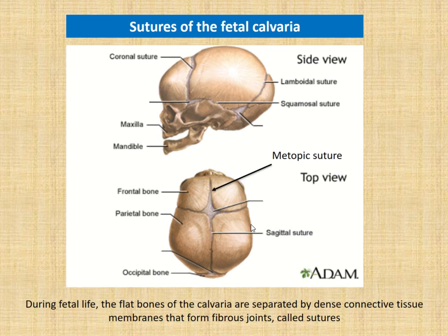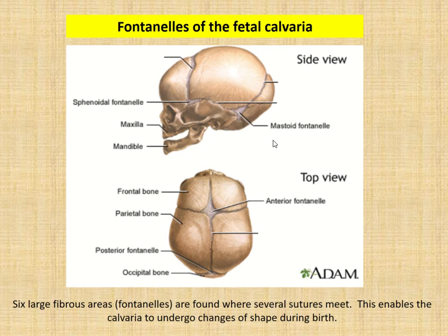During fetal life, the bones developing in the calvarium are separated by dense connective tissue. They're not fused into one plate of bone — they're connected by dense connective tissue in fibrous joints called sutures. Where these sutures meet, you have spanning dense connective tissue that is rather large, resulting in six areas in the developing calvaria referred to as fontanelles. These fontanelles have clinical applications — you can use them to check for dehydration and other things you're learning about in your flip classroom session.